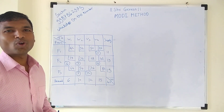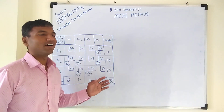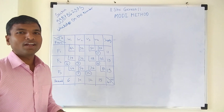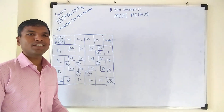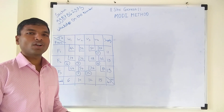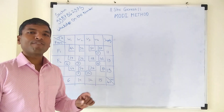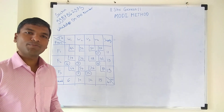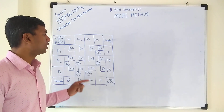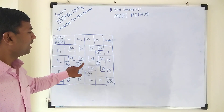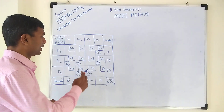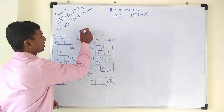Today we are going to solve a transportation problem with the help of the MODI method. In my previous video lecture I solved the same problem using the VAM (Vogel's Approximation Method), where we got an initial feasible solution — these are the allocations we got with the help of VAM method. This is called the IFS: initial feasible solution.